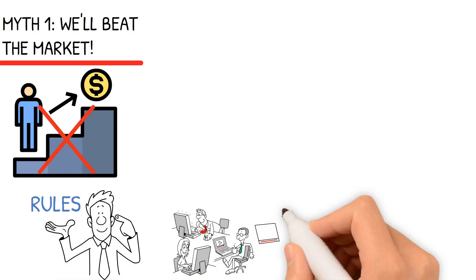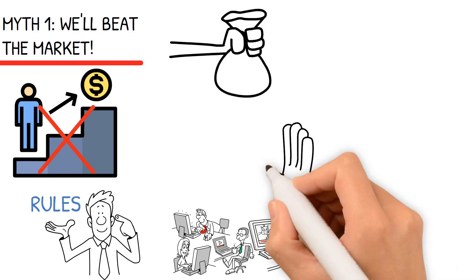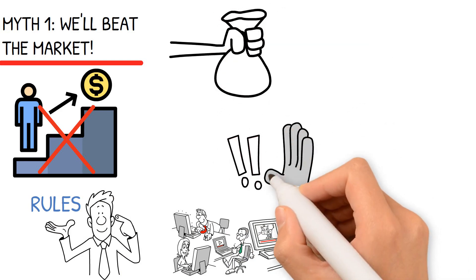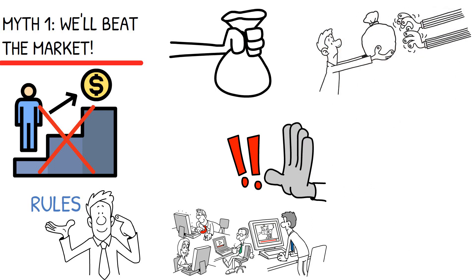Never dive into investments without understanding the rules. Marketing tactics from companies often lead people astray. For example, while investing in active funds, be aware of the risks. Regardless of profit, these funds levy high fees. Robbins suggests opting for index funds, which minimize risks.